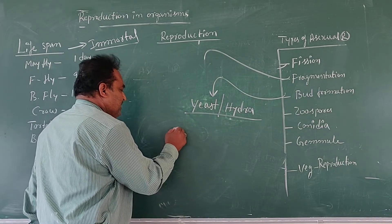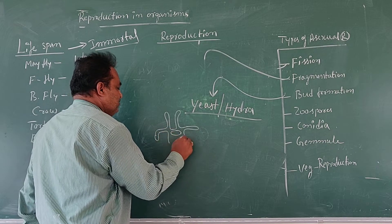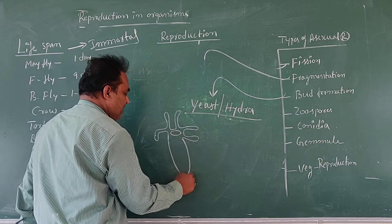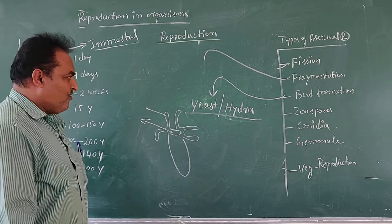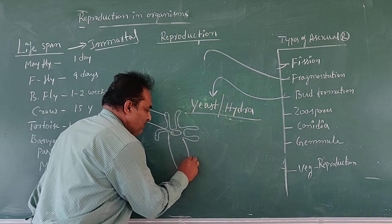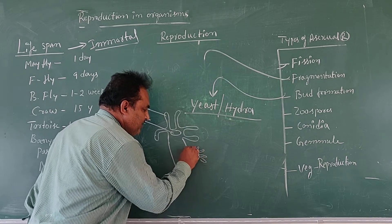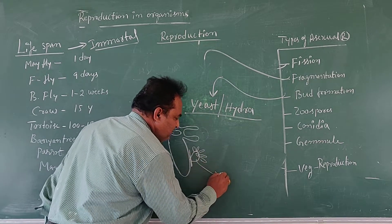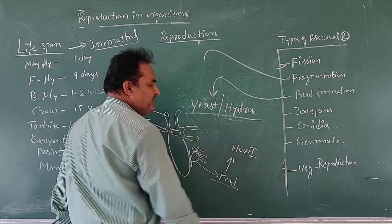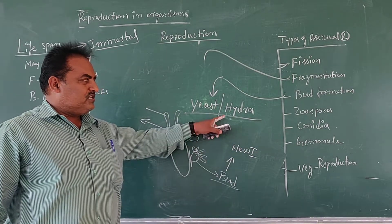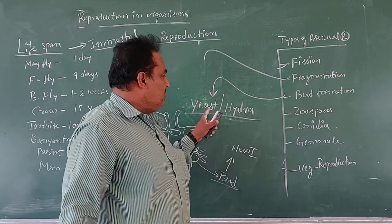In the case of Hydra, it belongs to Coelenterata. Here the terminal region of this Hydra has tentacles. At the surface of this Hydra, a production of outgrowths occurs. Such outgrowths are detached from the parent body. This bud results in a new individual. This kind of process of bud formation also occurs in the case of Hydra. The best example for bud formation is Hydra.